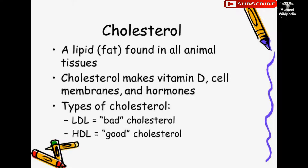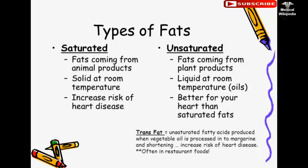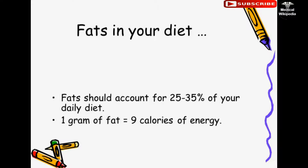Types of cholesterol: LDL equals bad cholesterol; HDL equals good cholesterol. Types of fats: Saturated fats come from animal products, are solid at room temperature, and increase risk of heart disease. Unsaturated fats come from plant products, are liquid at room temperature (oils), and are better for your heart. Trans fats are unsaturated fatty acids produced when vegetable oil is processed into margarine and shortening — often found in restaurant foods and increase risk of heart disease. Fats should account for 25–35% of your daily diet. 1 gram of fat equals 9 calories of energy.